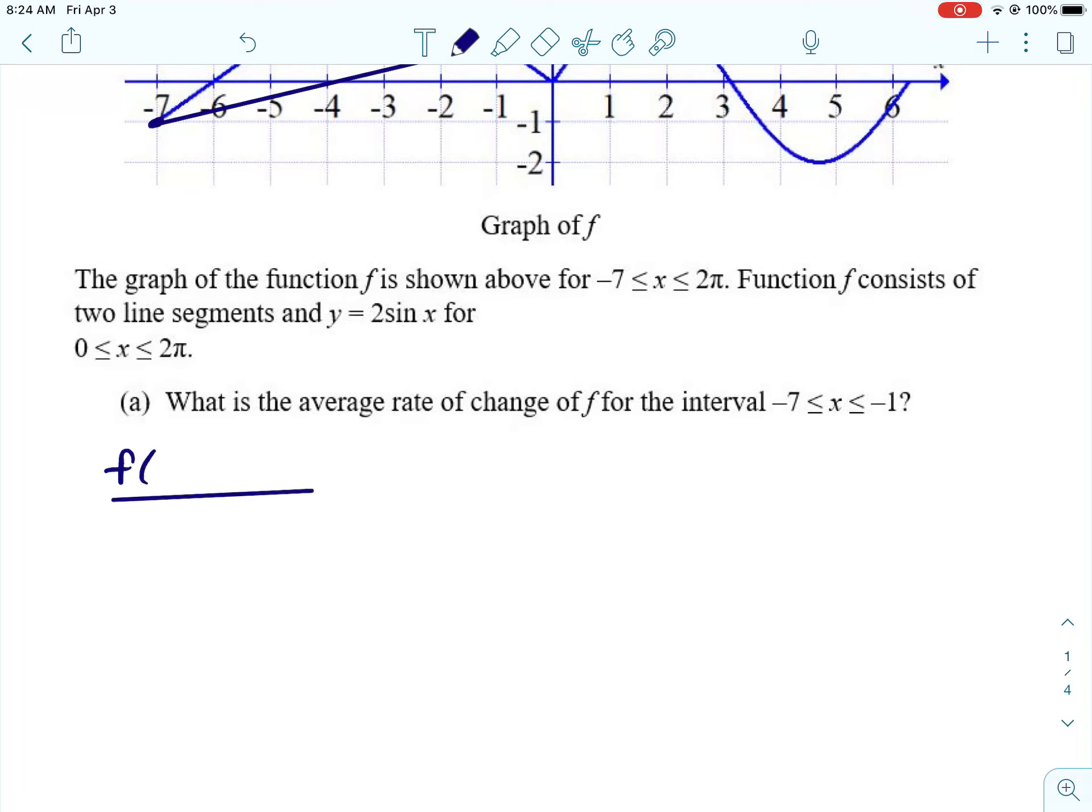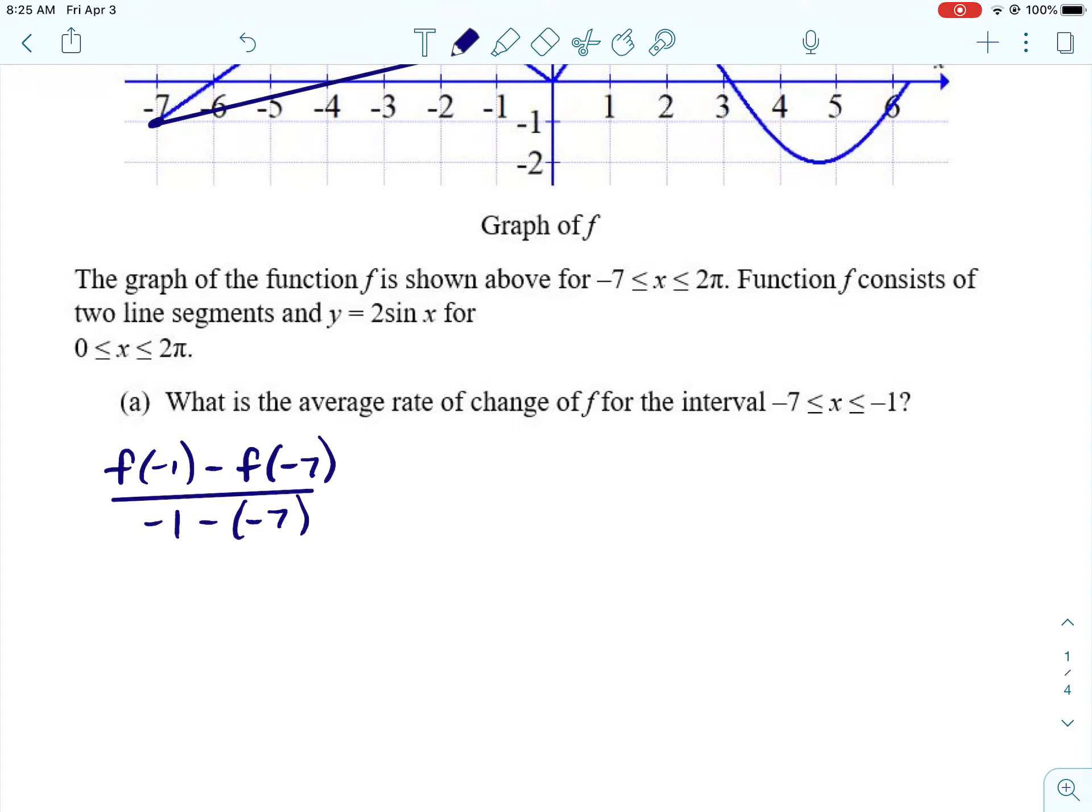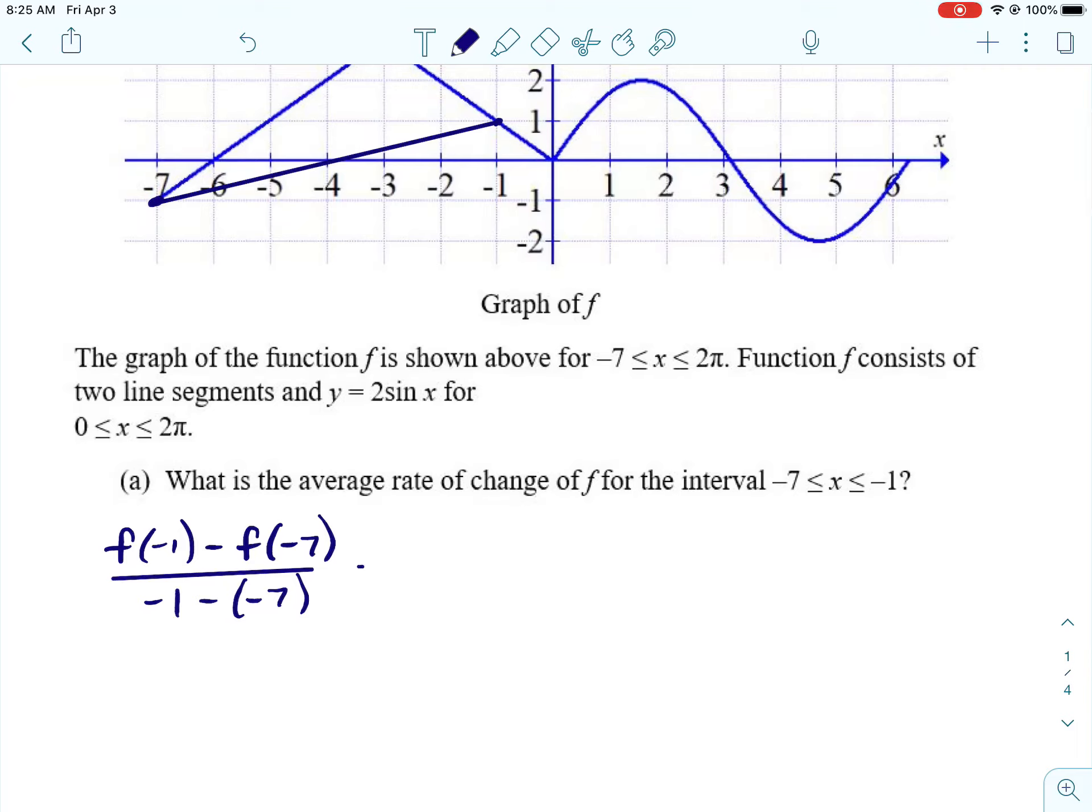So we would need to make sure we made it look like calculus by using the average rate of change formula, which is basically the slope formula. So in the numerator, we're going to take F of negative 1 and subtract F of negative 7 from it. And then denominator, we would subtract negative 1 minus negative 7.